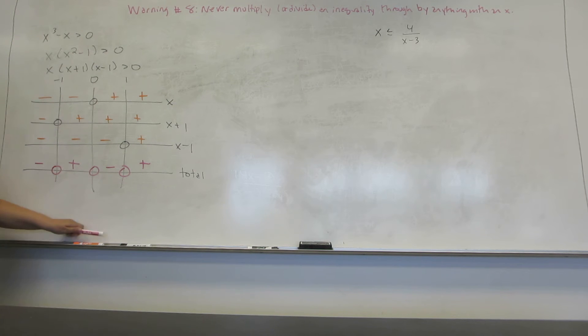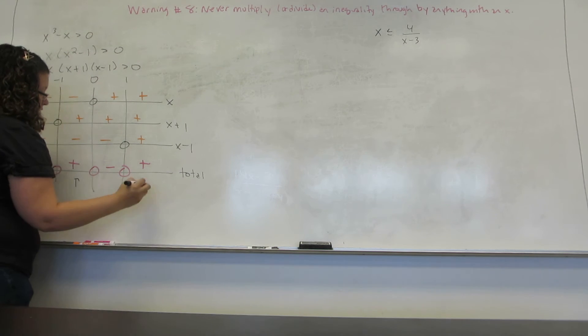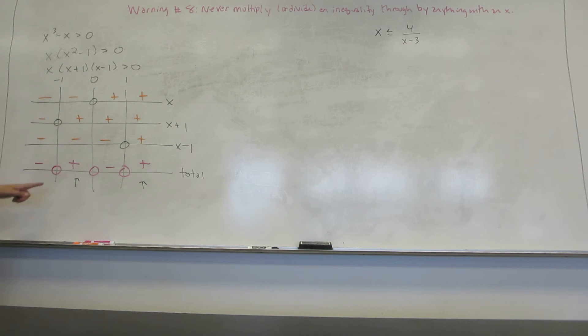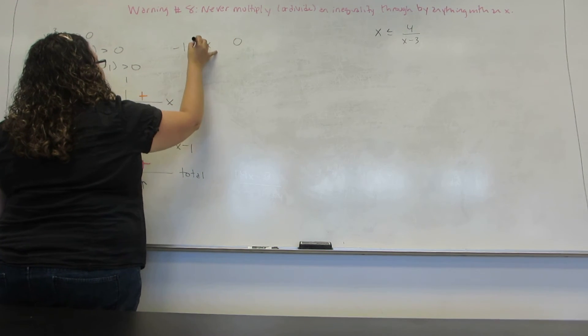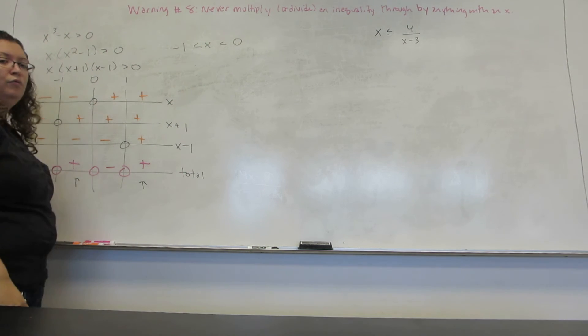Now we just have to know how to interpret this for our final answer. I go back to my equation and I need this total to be greater than but not equal to zero. So greater than zero is where it's positive. I don't want where it's equal to zero, so I don't want to include the zero points. I just want these two boxes. Now this one is in between the numbers negative one and zero without including either one.